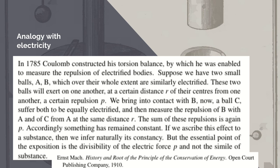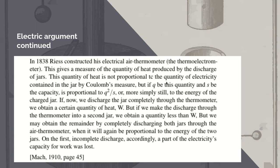In 1785 Coulomb constructed his torsion balance, by which he was enabled to measure the repulsion of electrified bodies. Suppose we have two small balls A and B which over their whole extent are similarly electrified. These two balls will exert on one another, at a certain distance R from their centres, from one another, a certain repulsion P. We bring into contact with B now a third ball, C, suffer both to be equally electrified, and then measure the repulsion of B with A and C with A at the same distance R. The sum of these repulsions is again P. Accordingly something has remained constant. If we ascribe this effect to a substance then we naturally infer its constancy. But the essential point of the exposition is the divisibility of the electric force and not the simile of substance.